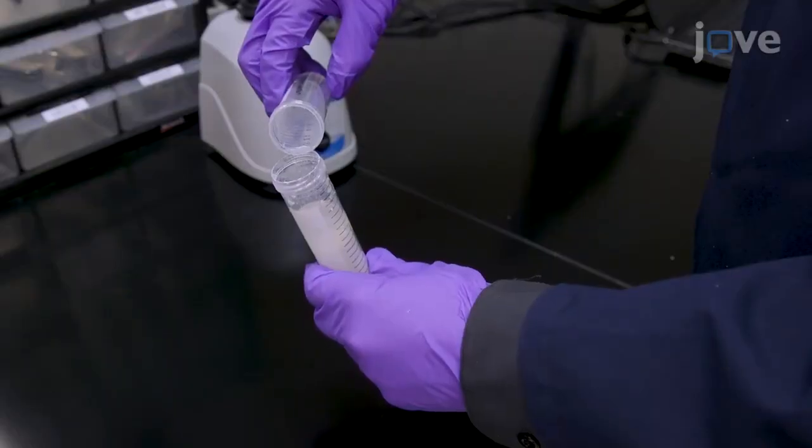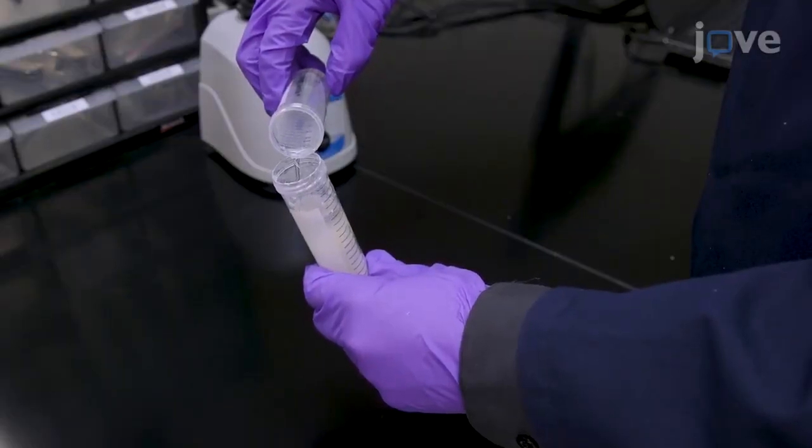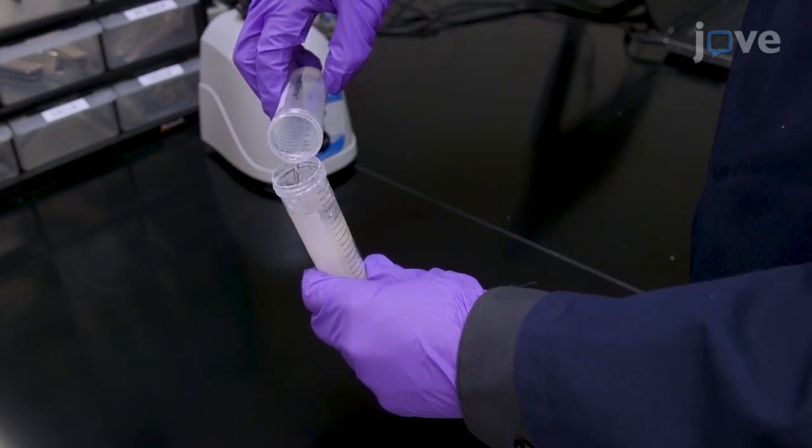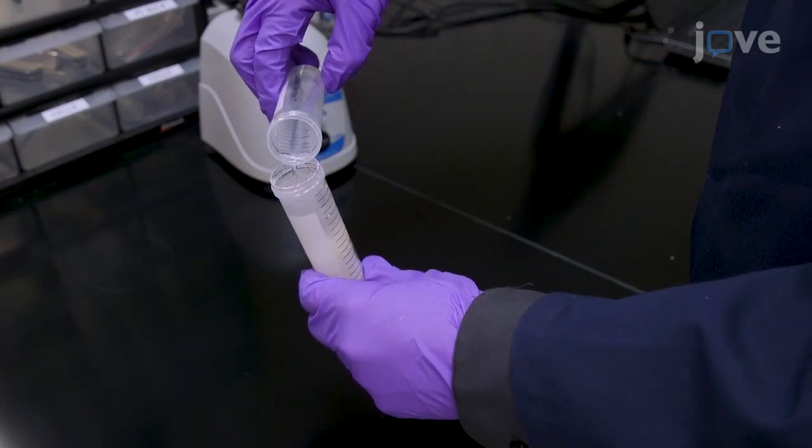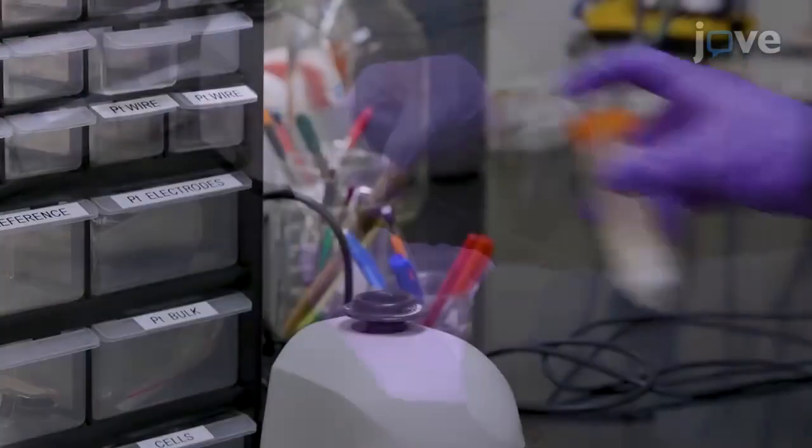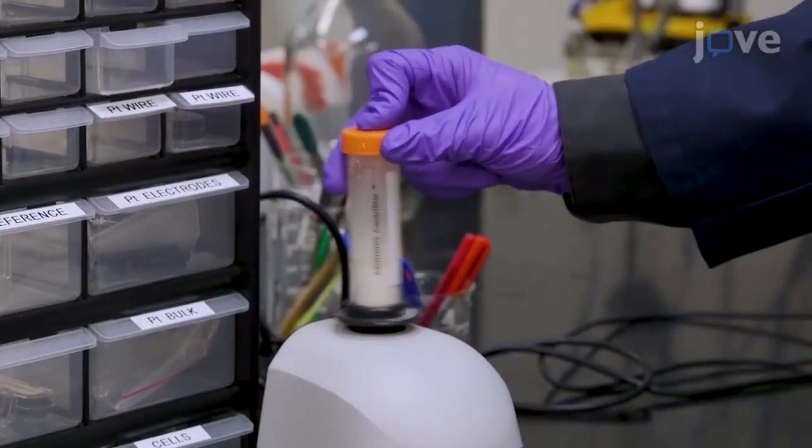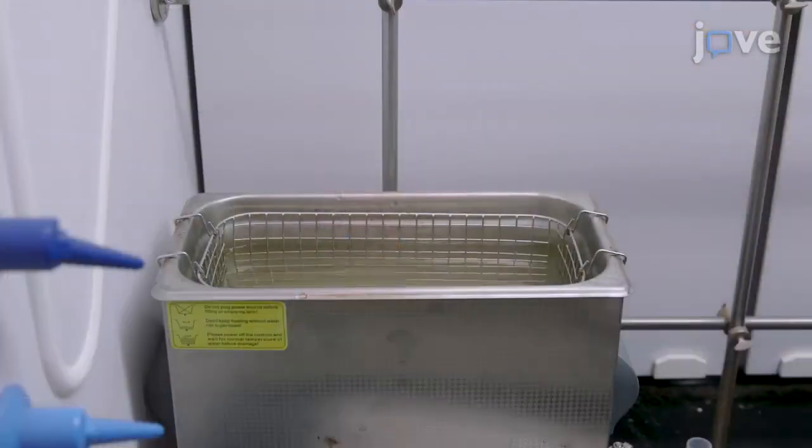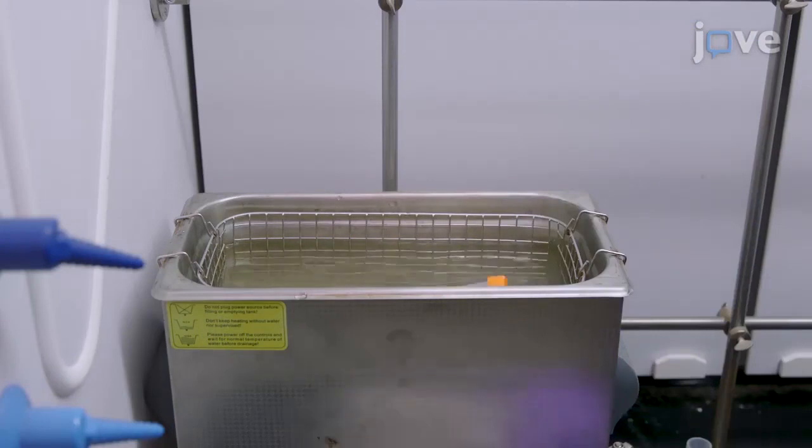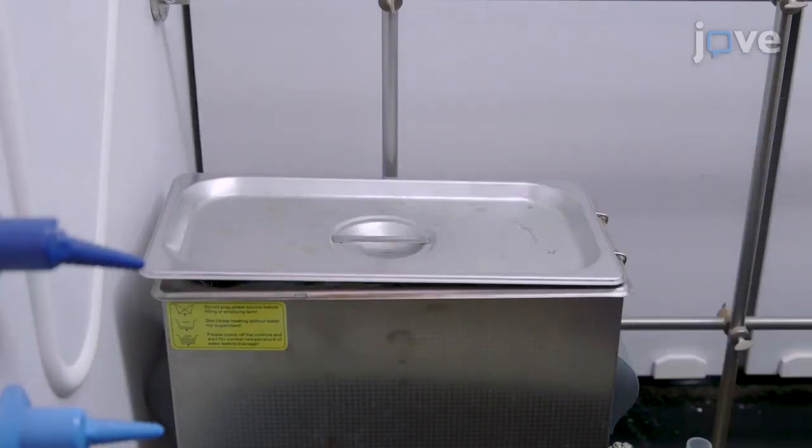To prepare a cellulose nanofiber solution, first mix 1.5 grams of carboxymethylcellulose nanofibers with 50 milliliters of deionized water. After shaking, vortex the solution for one minute, followed by a 24-hour incubation in a bath sonicator at ambient temperature to ensure complete mixing.